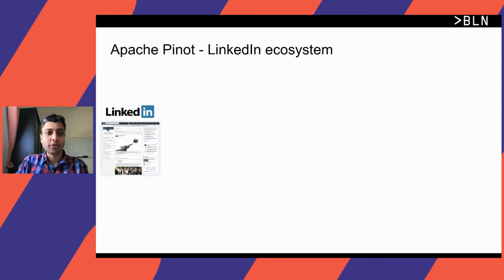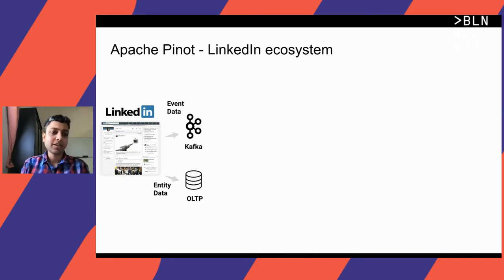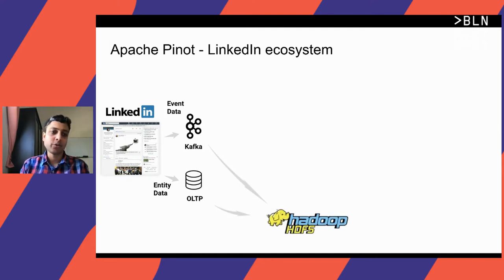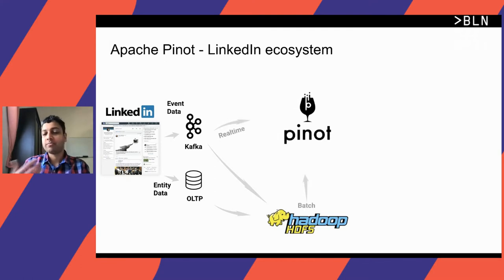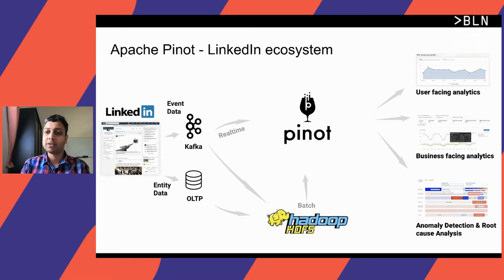Here's how Pinot fits into an overall data ecosystem, using LinkedIn as an example. When people visit LinkedIn, events are emitted to a streaming system like Kafka, and entity data around users and companies is stored in an OLTP store. Data is also continuously archived into a long-retention store like HDFS. Pinot can ingest from all these sources — Kafka and HDFS — providing a consolidated logical view, hiding complexity from the user, on top of which you can build all these different use cases.